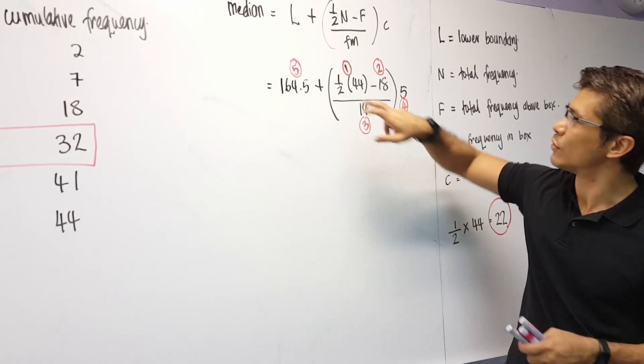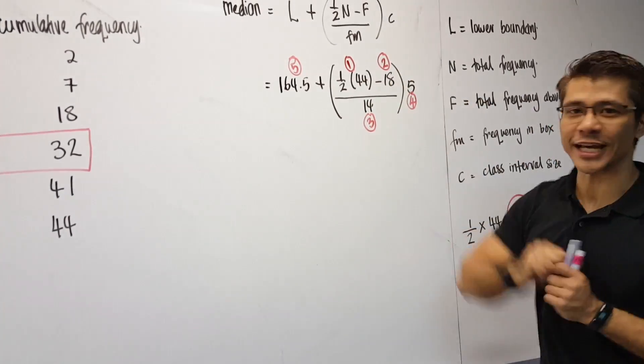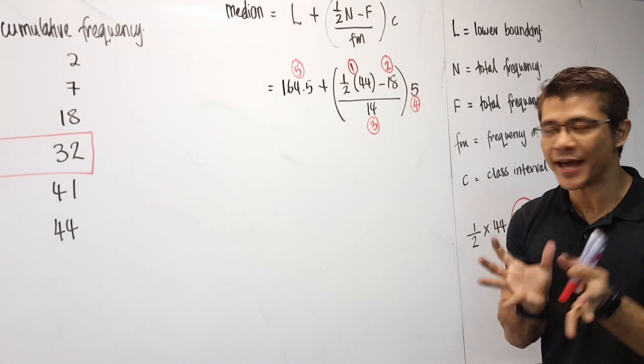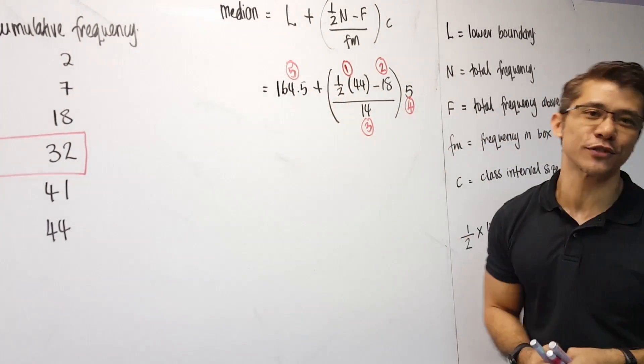What this means is first, I take half times 44, find that answer, minus 18. After which, we divide by 14, and then multiply 5, and lastly, plus 164.5.